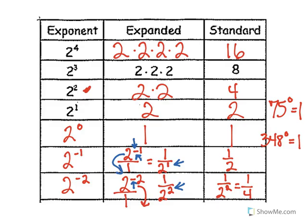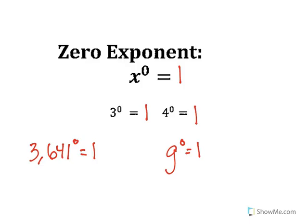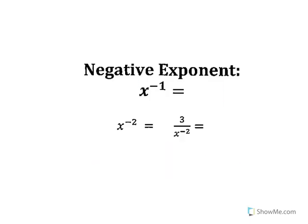A zero exponent — anything to the zero power equals one. Three to the zero power: one. Four to the zero power: one. Three thousand six hundred and forty-one to the zero power: one. Any number to the zero power — g to the zero power — is one.